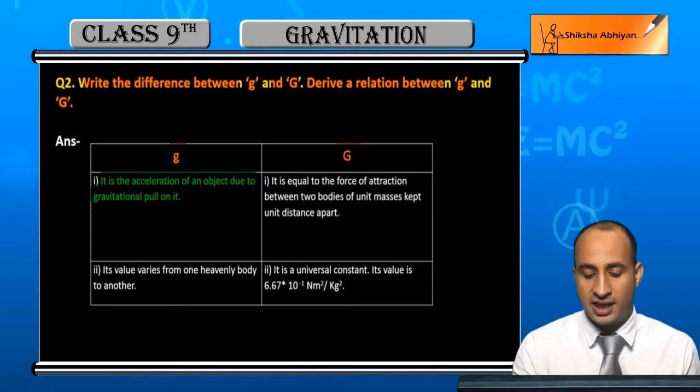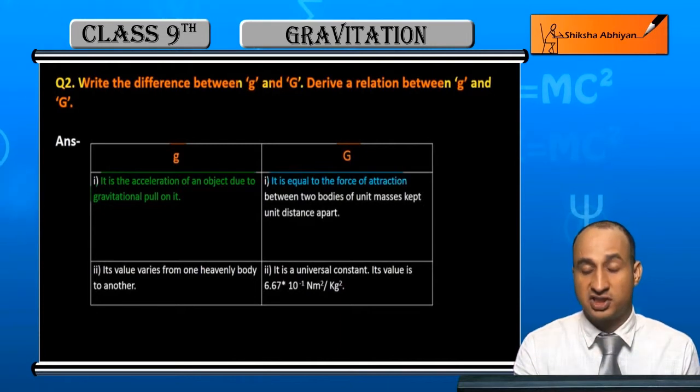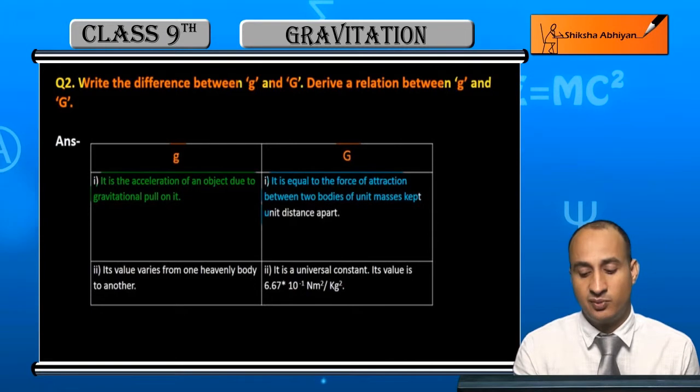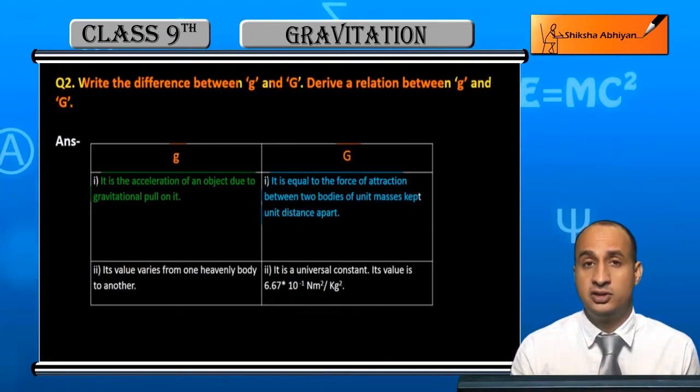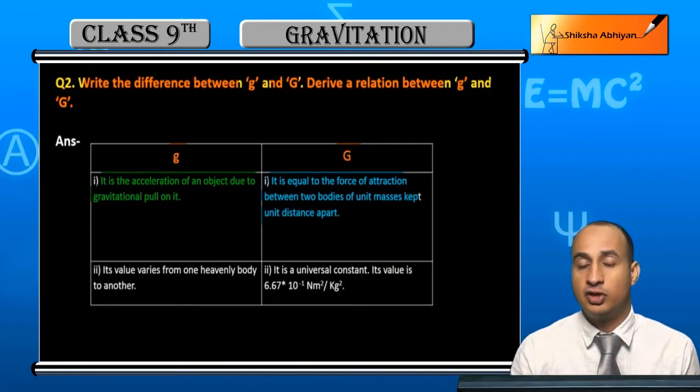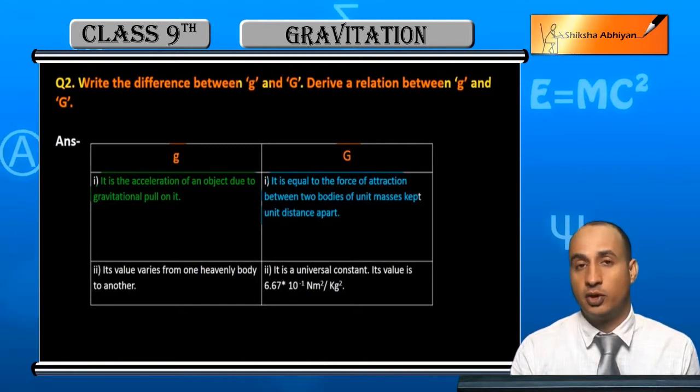Capital G is equal to the force of attraction between two bodies of unit masses kept unit distance apart. We derived from gravitational formula F = G m1 m2 / r².